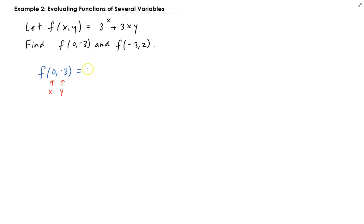So you're going to get 3 to the power x, plus 3 times 0, times y, just minus 3. So 3 to the power 0, that's going to be 1, plus...